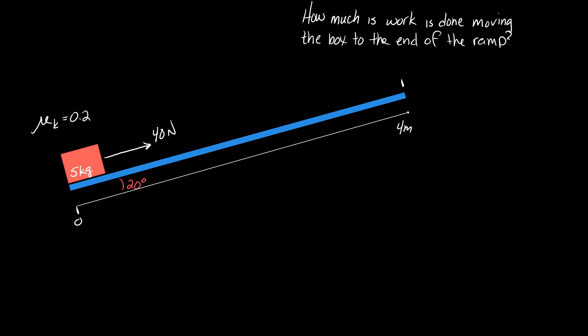There are a total of four forces that act on the box, but only three of them do work. The normal force doesn't do any work. The normal force is perpendicular to the ramp, and the box moves up the ramp, so there's no component of the normal force in the direction of motion, so it can't do any work.